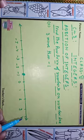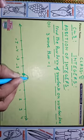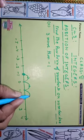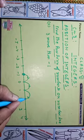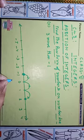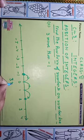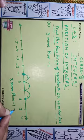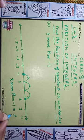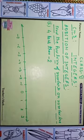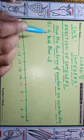Three more means from minus one we go three steps to the right side. First step, second step, and third step. This position becomes three more than minus one, which gives us two. So minus one plus three equals two.